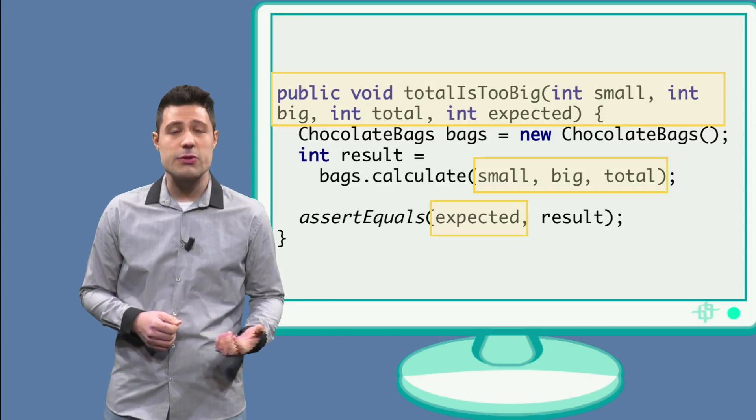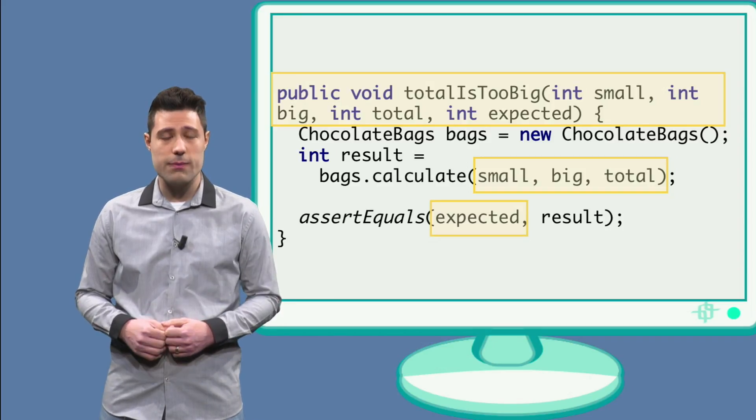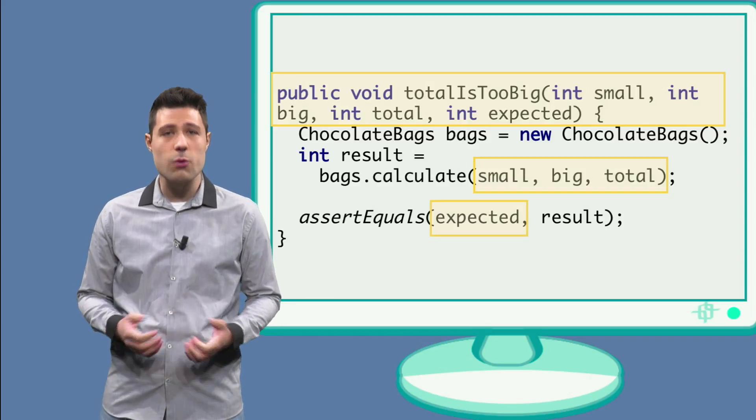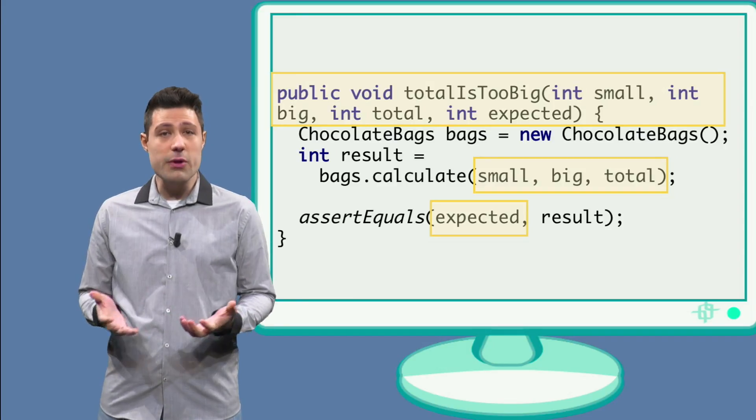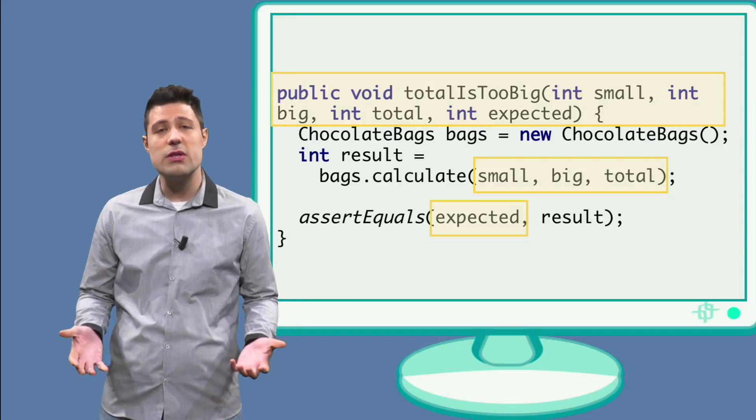The first three will be for the inputs, small, big and total. The fourth one will be for the assertion. After all, the input is abstracted away, so leave the assertion.